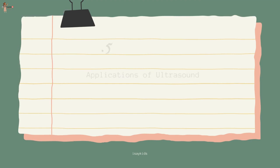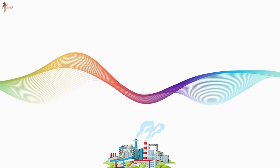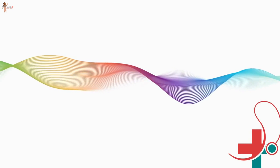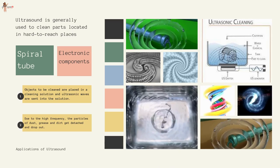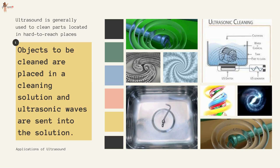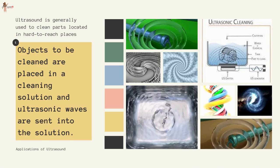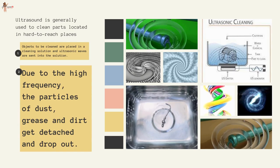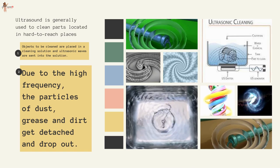Applications of ultrasound: Ultrasound are high-frequency waves able to travel along well-defined paths even in the presence of obstacles. Ultrasounds are used extensively in industries and for medical purposes. Ultrasound is generally used to clean parts in hard-to-reach places, such as spiral tubes, odd-shaped parts, and electronic components. Objects to be cleaned are placed in a cleaning solution and ultrasonic waves are sent into the solution. Due to the high frequency, particles of dust, grease, and dirt get detached and drop out, and the objects get thoroughly cleaned.